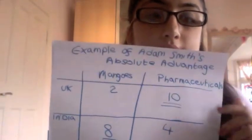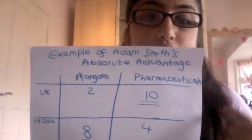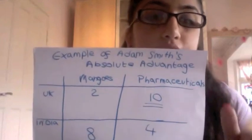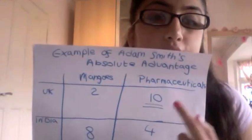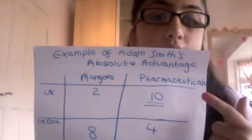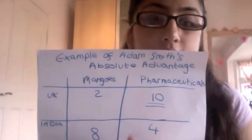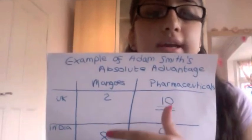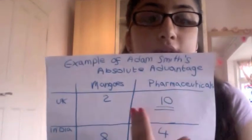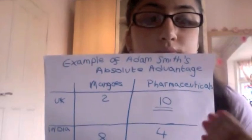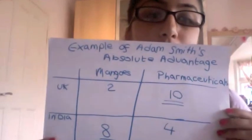Adam Smith said the UK should specialise in pharmaceuticals because it has absolute advantage over India — 10 is greater than 4. If the UK specialises in pharmaceuticals, it produces no mangoes; 100% of resources go into pharmaceuticals, and world output for pharmaceuticals becomes 20. India, on the other hand, should specialise in mangoes — 8 is greater than 2 — so the 50% of resources previously in pharmaceuticals move to mangoes, giving 16 mangoes and 20 pharmaceuticals. World output increases.